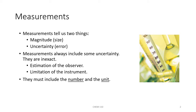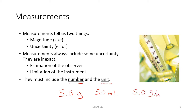When you write a measurement down in the lab or in the class, you must always include the number and the unit associated with that measurement. Just writing 5.0 means nothing. Is it 5.0 grams? Is it 5.0 milliliters? Or is it a density measurement where it's 5.0 grams per milliliter? You need to get into practice of always including the units along with the number.